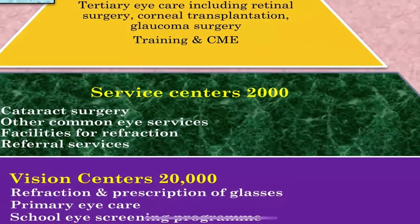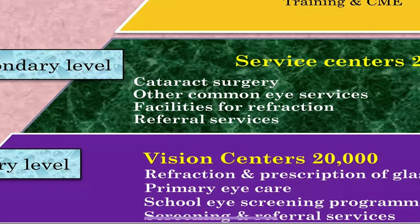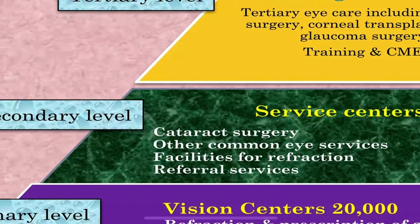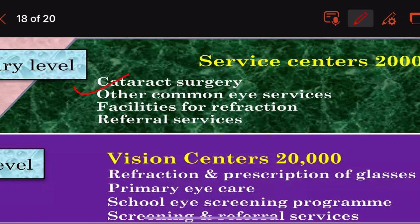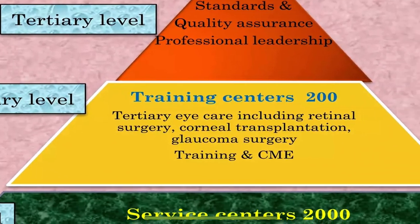At the secondary level, the service centers perform cataract surgery and other common eye services, including prescribing for refractive errors and providing glasses, with facilities for refraction and referral services. If a complication cannot be dealt with at the secondary level, the case is referred to the next level.